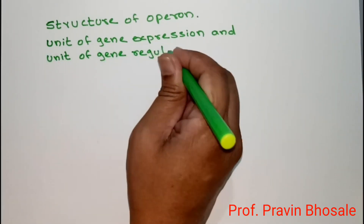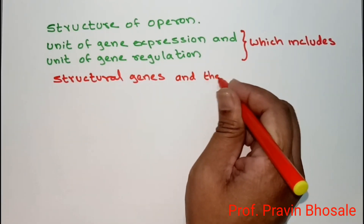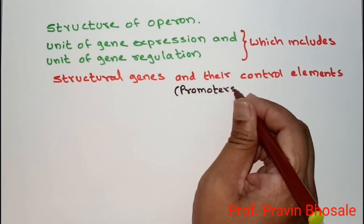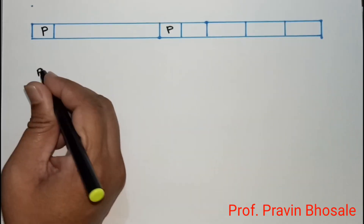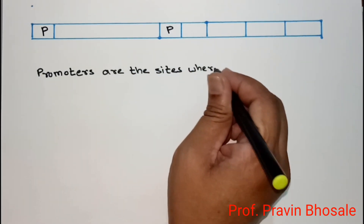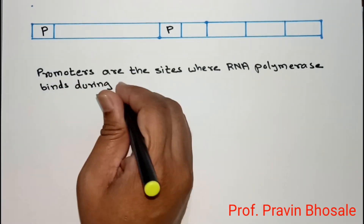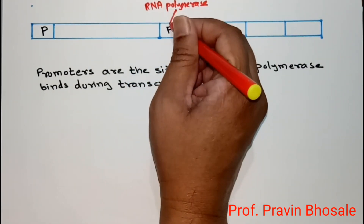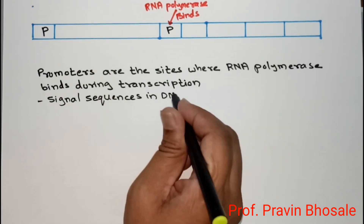The operon is also a unit of gene regulation, which includes structural genes and their control elements. The control element consists of a promoter and an operator. P stands for promoter — promoters are the site where RNA polymerase binds during transcription. These are the signal sequences in DNA that start RNA synthesis.